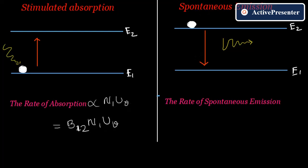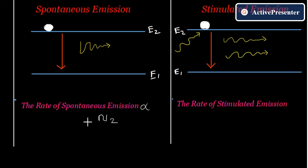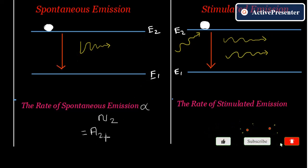In the case of spontaneous emission, the electron is already in the higher state energy level, so the rate of spontaneous emission is directly proportional to N2, the number of electrons at E2. Removing the proportionality constant, we use Einstein coefficient A21 — where '2 to 1' denotes the transition from E2 to E1 — giving rate = A21·N2.